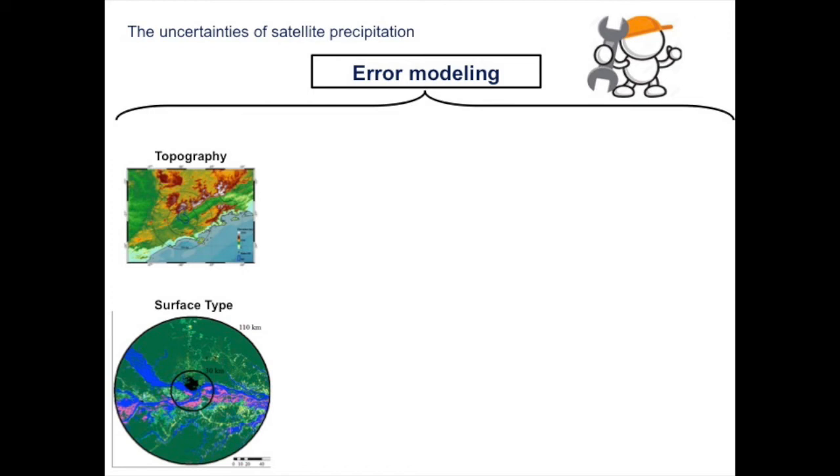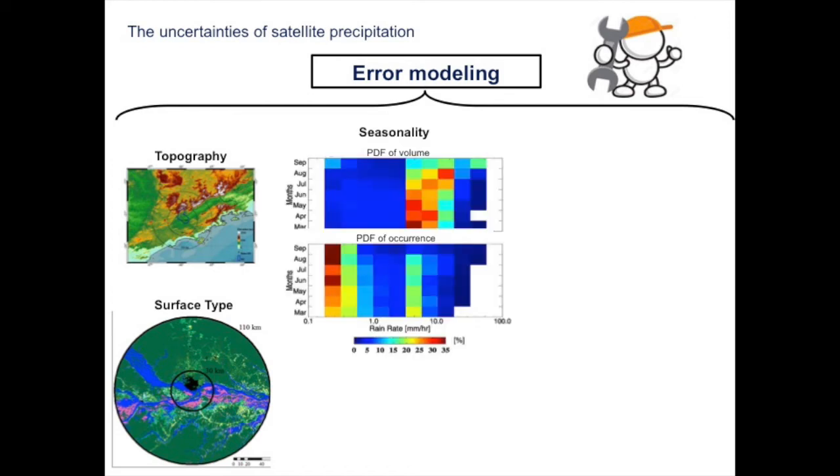Also the seasonality factor is really important over the region, considering that the rainfall frequency, the volume of precipitation, and the occurrence of precipitation varies from light rainfall to heavy rainfall, depending on the period of analysis.